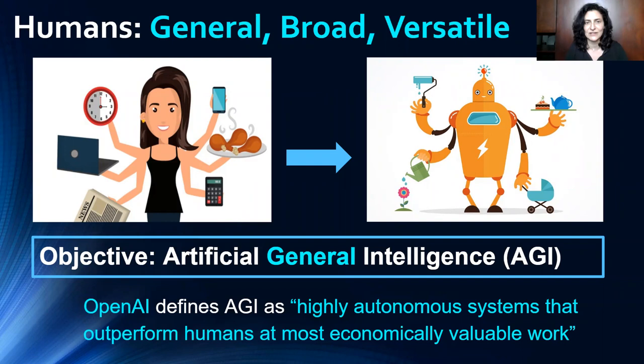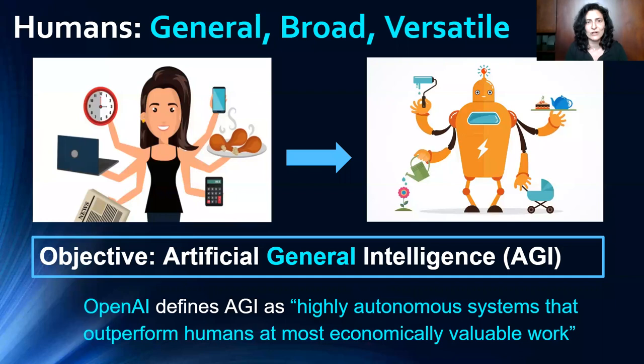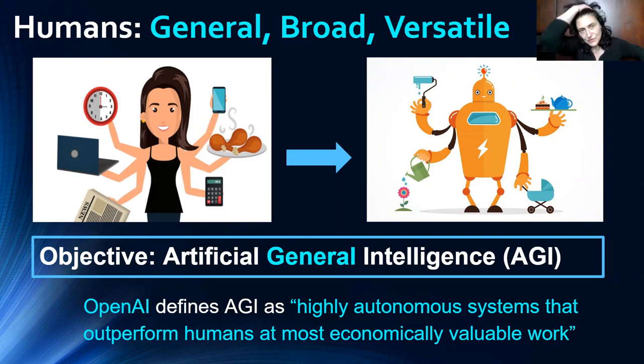Machine learning essentially piggybacks on top of statistics and tries to do the same thing, but the data become more complex and high-dimensional. Instead of simple curve fitting, you use more sophisticated tools — deep learning is a more sophisticated form of curve fitting than logistic regression. But essentially it's all about generalization at more and more general levels.